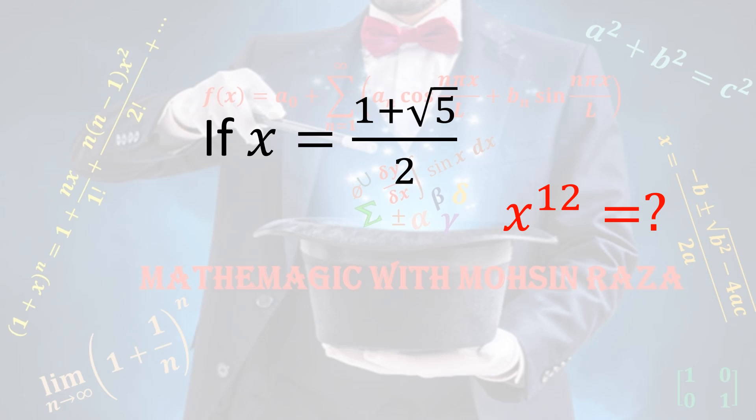Hi, welcome to my channel Mathemagic with Mohsen Roza. Today we have an interesting question from an international Mathematical Olympiad: if x equals 1 plus root 5 over 2, can you find x raised to power 12 easily without any calculator? To watch this video, please subscribe to the channel and press the bell icon.